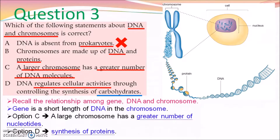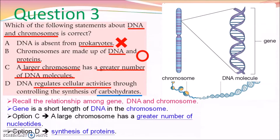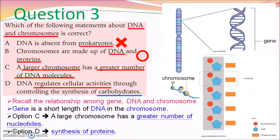Chromatin coils with protein to form the dense structure called chromosome. For option C, which is wrong: a chromosome actually contains one DNA molecule. However, the larger the chromosome, the greater the number of nucleotides, because DNA is composed of many nucleotides — a larger chromosome contains longer DNA and more nucleotides. For option D, which is also wrong: DNA gives instructions for protein synthesis, and the protein is then used to form enzymes or hormones for controlling cellular activities. So it should be synthesis of protein, not carbohydrates.